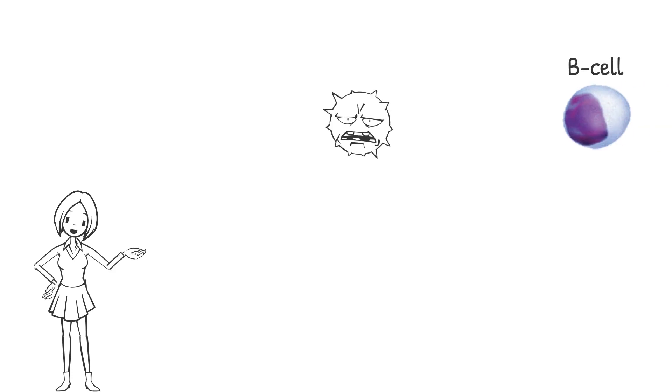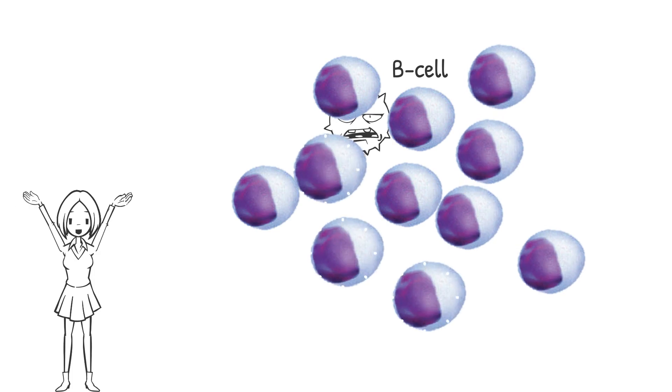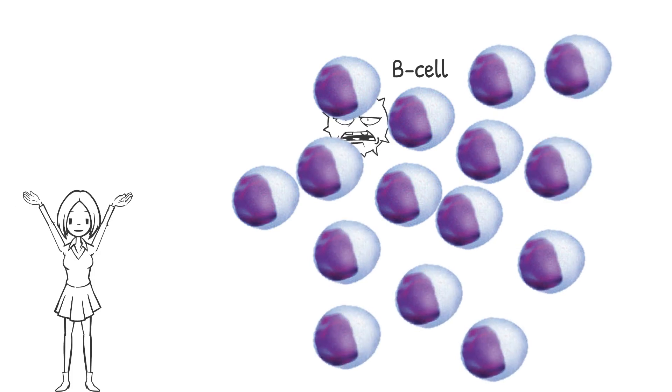In this case, the B cells eventually will meet the invader and start cloning, and produce an army of itself with specific antibody against the invader, or antigen.